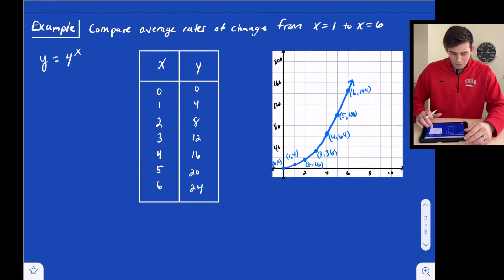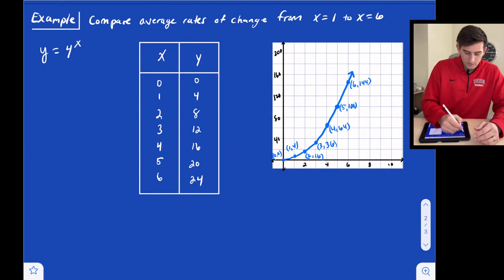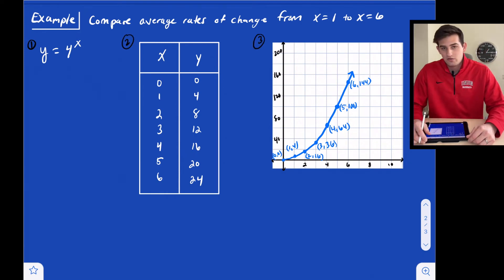Let's look at one example where we compare three different functions. For the first part, we have an exponential equation. For number two, we have a table, and over here we have a graph. We're going to compare all three of these. We're going to compare the average rate of change from when x is 1 to x is 6.